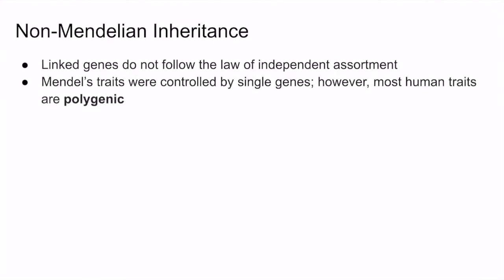Second, Mendel's traits were controlled by single genes, but most human traits are polygenic. In Mendelian inheritance, each trait is linked to a single gene — for example, the flower color of a pea plant is entirely determined by one single gene. However, in humans, most traits are actually polygenic, meaning they're influenced by multiple genes. In these cases, it's much more difficult to map and identify the specific genes which contribute to a polygenic trait. It's important to keep these exceptions in mind and understand that Mendelian inheritance does not always apply.